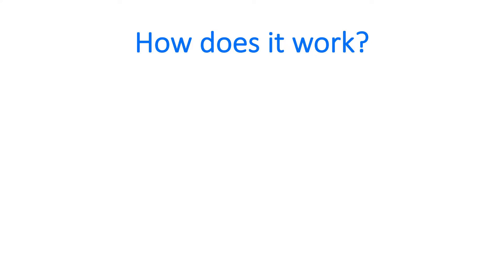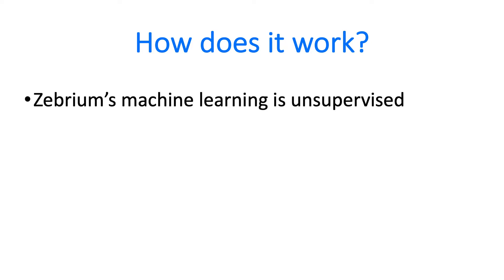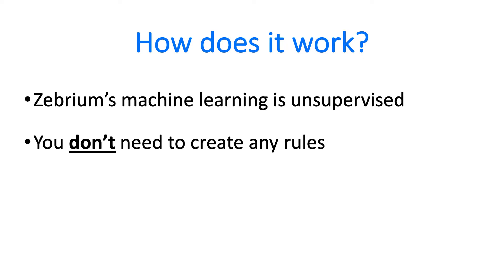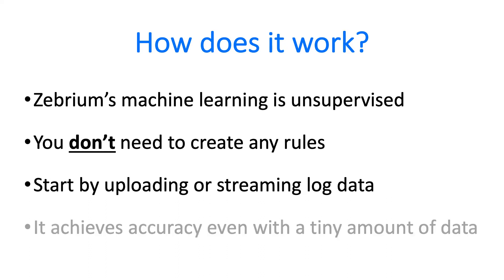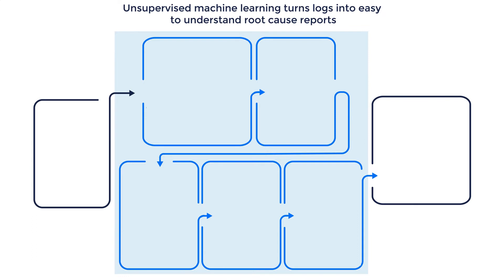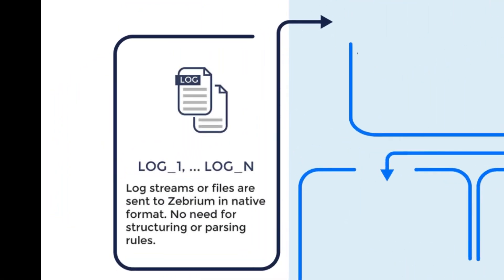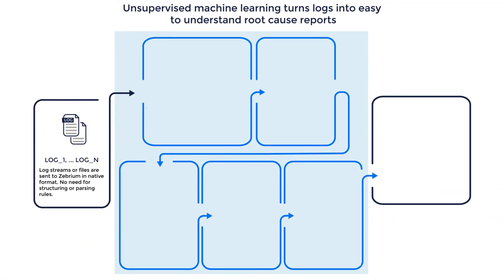Essentially, we've uncovered and modeled the fundamental ways software behaves when it breaks. The most important thing to remember is that the machine learning is completely unsupervised — you don't need to create any rules or perform any special configuration for it to work. To start using Zebrium, you simply need to start streaming or uploading your logs, and it achieves accuracy even with very small amounts of data. We use a multi-layered machine learning approach to analyze the logs, which starts as soon as logs are received. The logs can be from any application or type of infrastructure, and you don't have to tell us about the formats or set up any parsing rules.